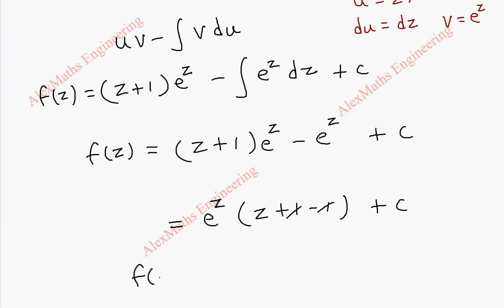Taking e^z common: e^z·(z + 1 - 1), and the 1s cancel. So finally f(z) = z·e^z + c. This is our analytic function.